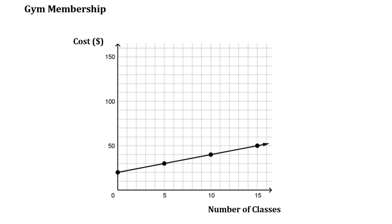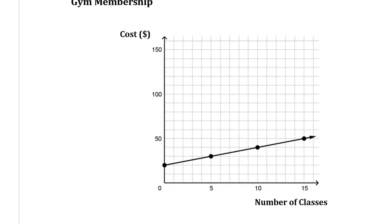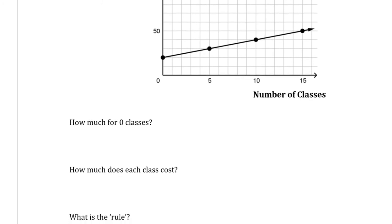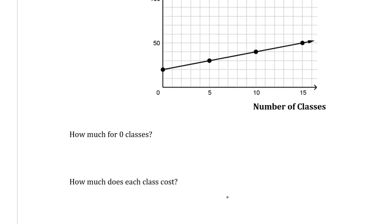Today we're going to do one example together, and there will be an activity posted that you can do optionally with solutions that has a whole bunch more examples. There will also be some practice and the solutions for that will be available in the classroom for you to make sure you're on the right track. Whenever we're talking about a linear relation, there are always two things we need to find. How much for zero classes? That is the start.